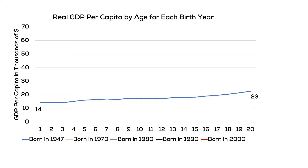Since I'm using real GDP per capita, I can compare living standards across time and generations. For the generation born in 1947, real GDP per capita at birth was $14,000 in real terms.